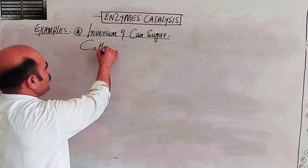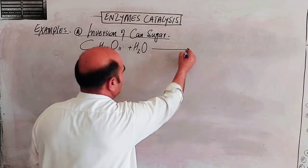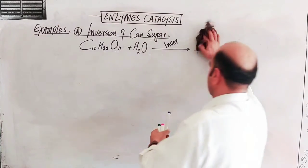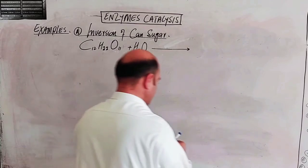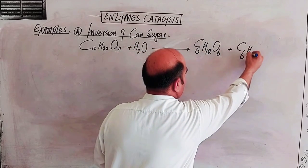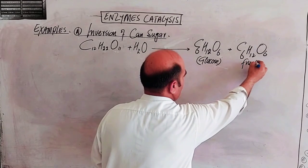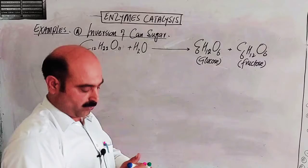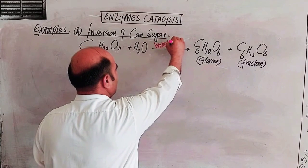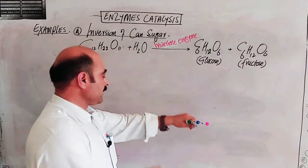The formula for cane sugar is C12H22O11. By hydrolysis using the enzyme Invertase, cane sugar breaks down into C6H12O6 plus C6H12O6 — that is glucose and fructose. Glucose has an aldehyde functional group, making it an aldose, while fructose has a ketone functional group, making it a ketose. The enzyme used is called Invertase.